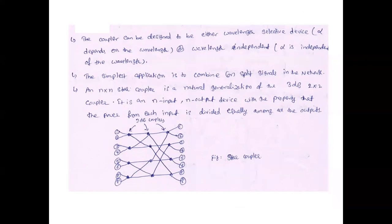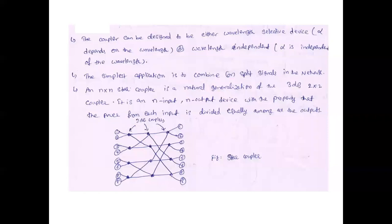Till now we have discussed only 2×2, but in real-time applications it is n×n couplers, also called n×n star couplers. This involves 3 dB power splitting. The basic concept is the 2×2 coupler with 2 inputs and 2 outputs. The combination of multiple 2×2 couplers is called an n×n star coupler. For example, this figure shows an 8×8 star coupler with inputs 1 to 8 and outputs 1 to 8, with 3 dB coupling at each stage.